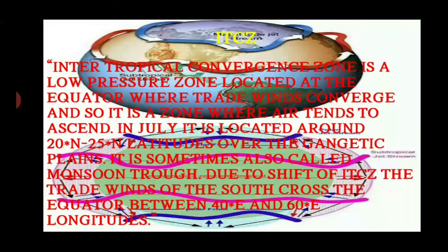The ITCZ stands for Intertropical Convergence Zone — a low pressure zone located at the equator where trade winds converge, creating a zone where air tends to ascend. In July, it is located around 20 to 25 degrees north latitudes over the Gangetic plains. It is sometimes also called the monsoon trough. Due to the shift of the ITCZ, the trade winds of the south cross the equator between 40 degrees east and 60 degrees east longitudes.